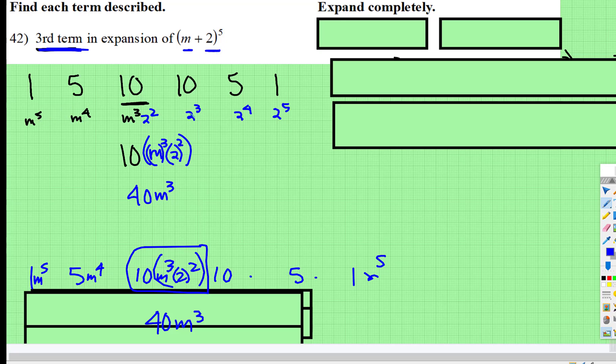So m to the fifth, fourth, third, and then I stopped because it's looking for the third term. And then 2 to the fifth, fourth, third squared.